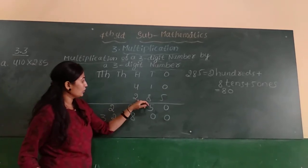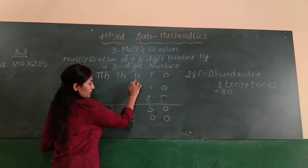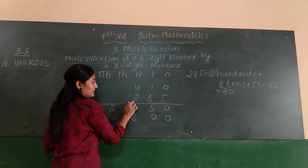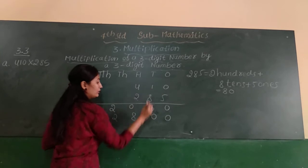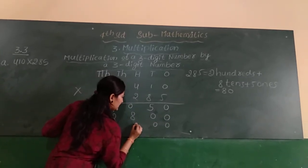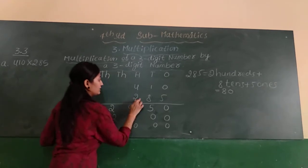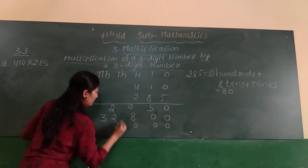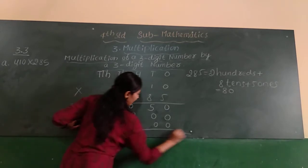Next 2. 2 is in the hundreds place, so 200. 200 into 0 is 0. Next 2 ones are 2. Next 2 fours are 8.